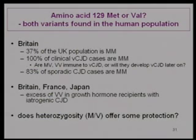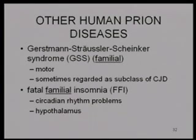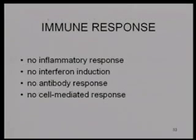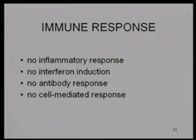In growth hormone recipients there tends to be an excess of people who are heterozygous, so we don't know whether being heterozygous is actually protective. GSS tends to present with motor symptoms and is often regarded as an inherited subclass of CJD. Fatal familial insomnia was always thought to be inherited, but there have been sporadic cases; it presents with circadian rhythm disruption and seems to attack the hypothalamus. Prions are one of our own proteins — there is no inflammatory response, no interferon, no antibody response, no cell-mediated response. We do have antibodies raised in specially derived mice that can detect the protein for use in immunofluorescence studies, but patients themselves don't raise an immune response.